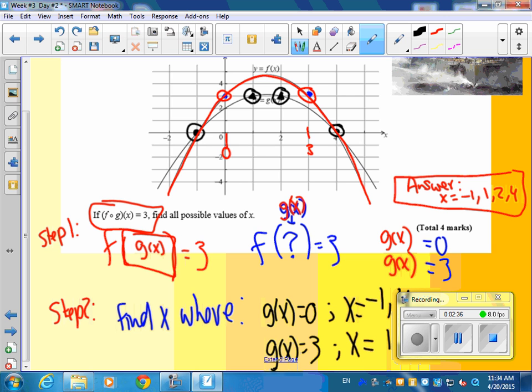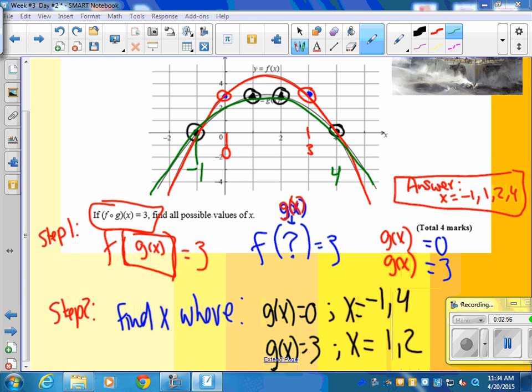That's the composition thing that we're looking at. So if g of x has to equal 0, g of x equals 3, I take the g of x curve, which is this one. And I look to see when g of x is equal to 0. Well, that's at negative 1 and at 4. So there's two of my four answers, negative 1 and 4. And then g of x can also be equal to 3. So that's happening at 1 and 2. So those are my four answers.